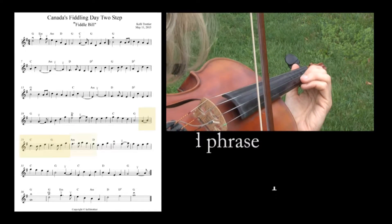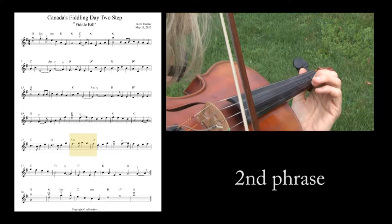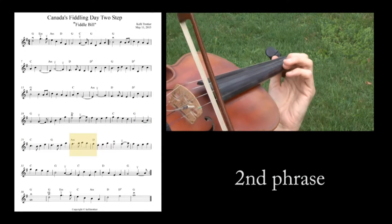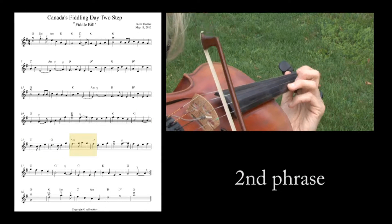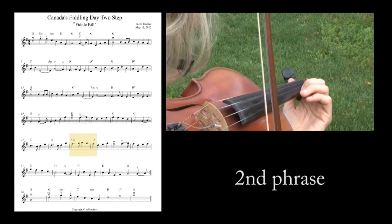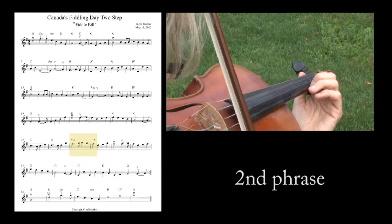Next phrase, we fall to an F sharp on a down bow. That's an easy one — down bow.